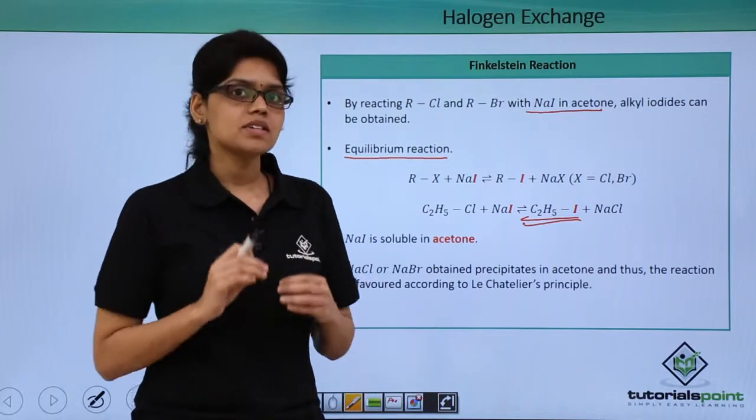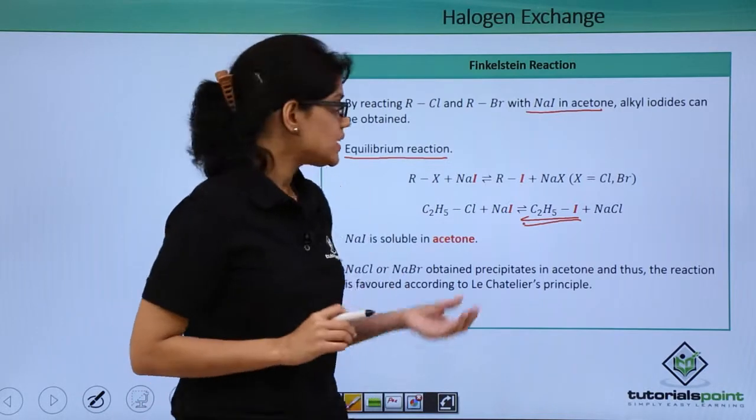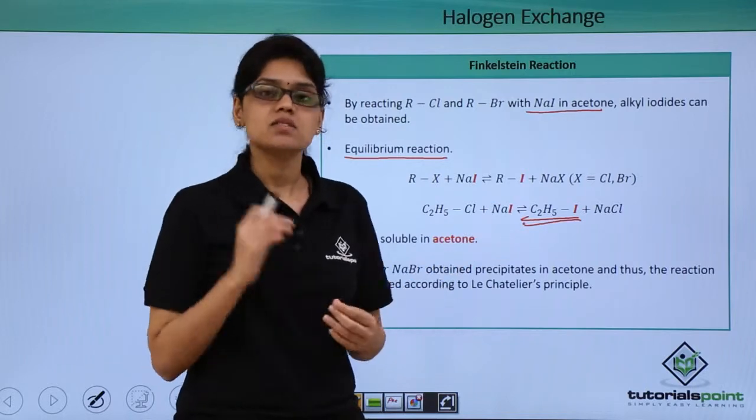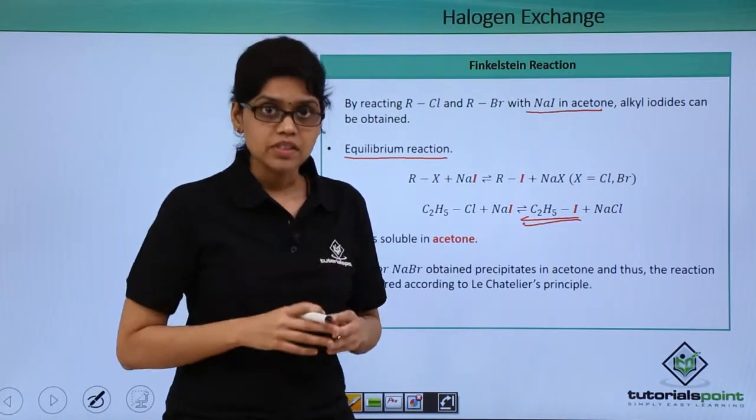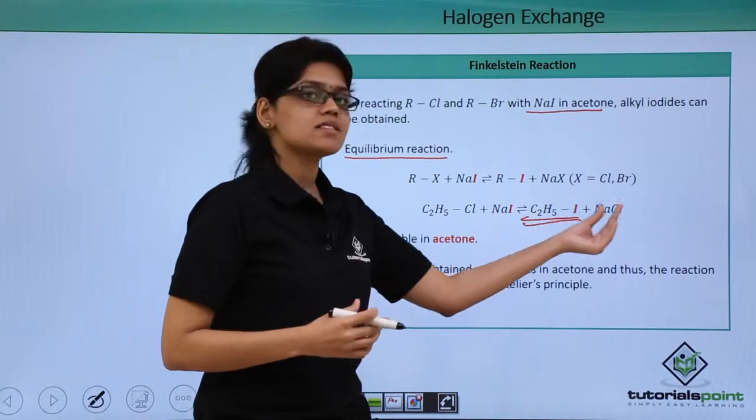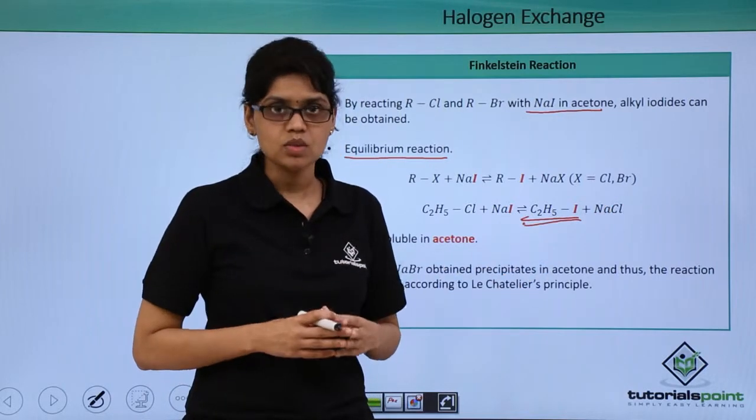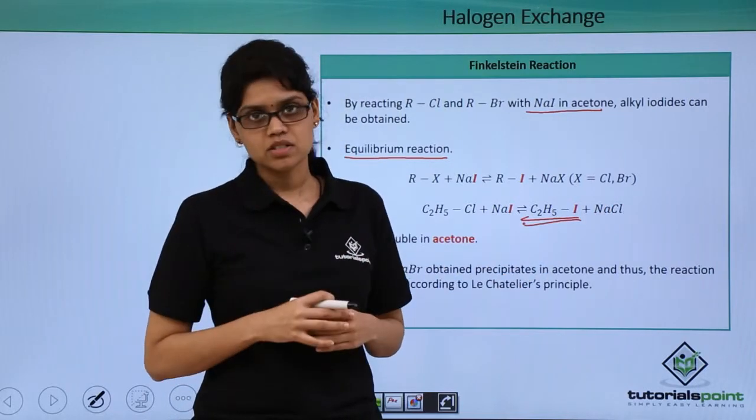Here we use the concept of solubility differences. We know that NaI (sodium iodide) is soluble in acetone, however the byproducts NaCl and NaBr are not soluble in acetone and they precipitate out of the reaction mixture.